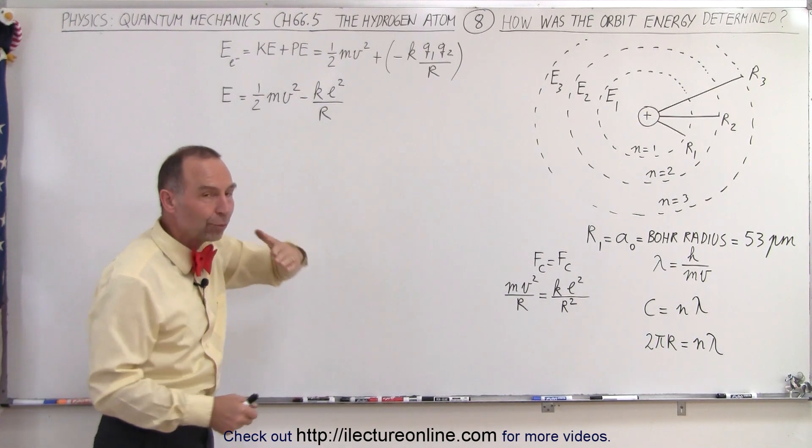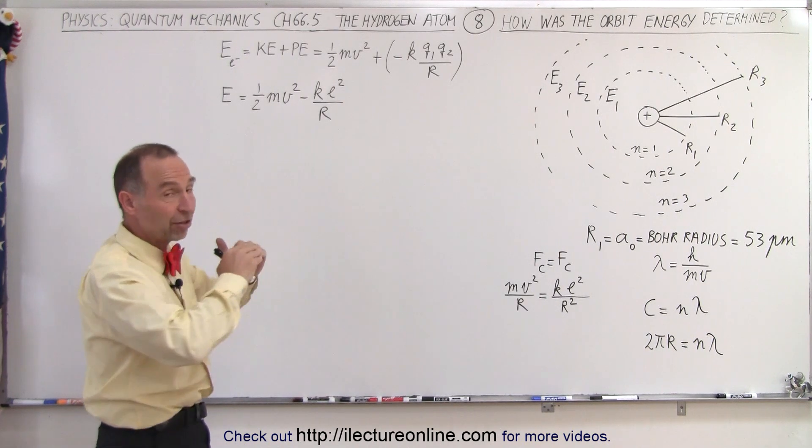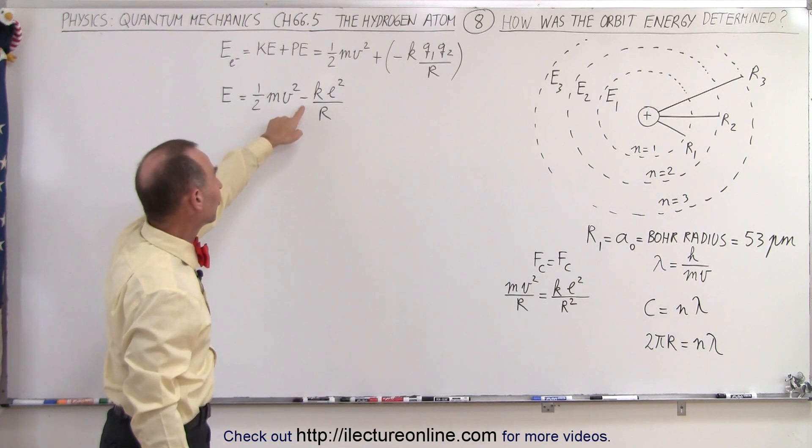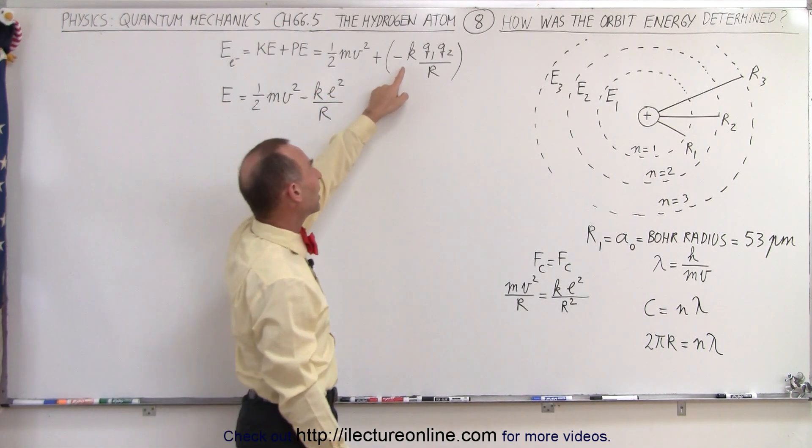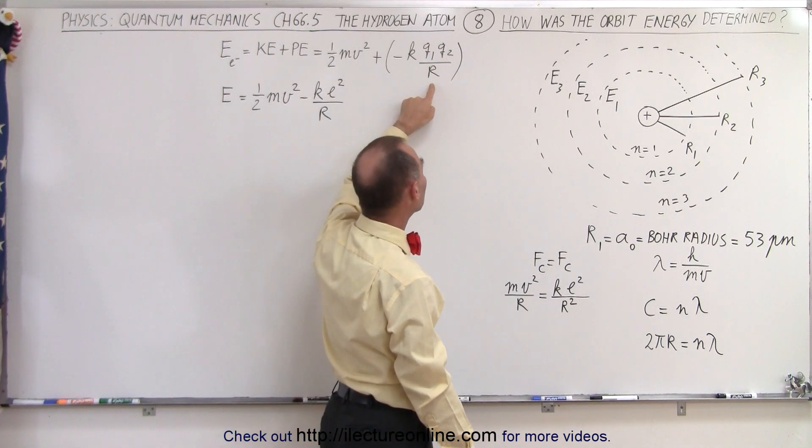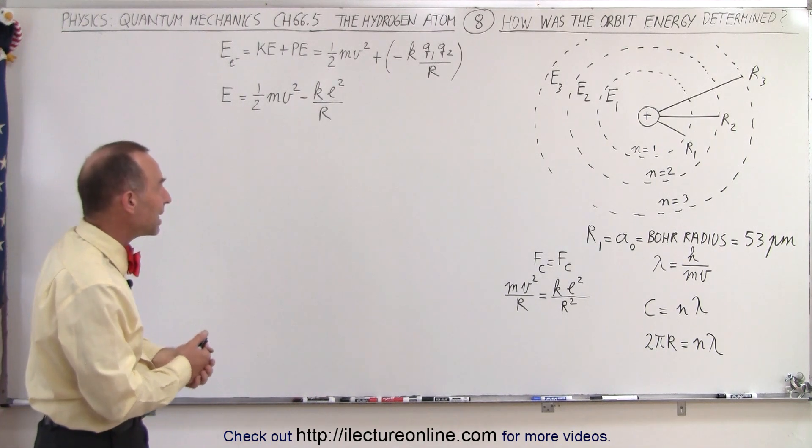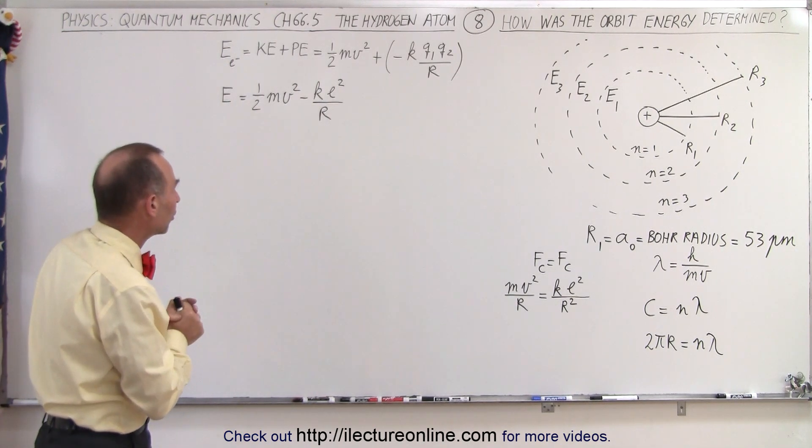And the potential energy, which is going to be a negative energy, assuming zero potential energy at infinity and falling down into a potential well, therefore minus ke² over r. It's actually minus kq₁q₂ over r, but of course since the charge is the electron and the proton, we can replace q by e, the charge of an electron, and we're just talking about the magnitude of the charge.